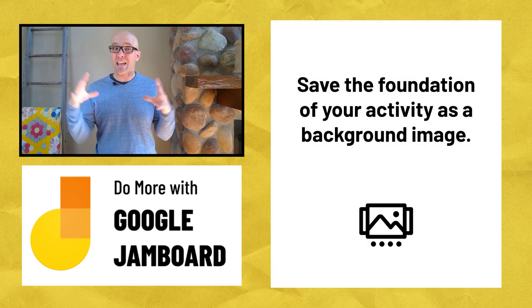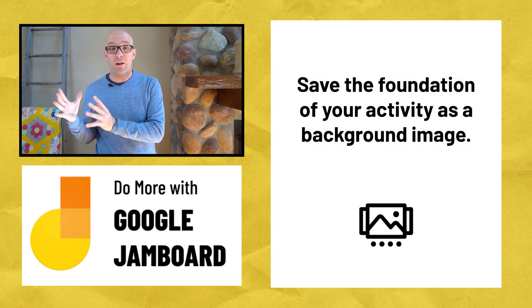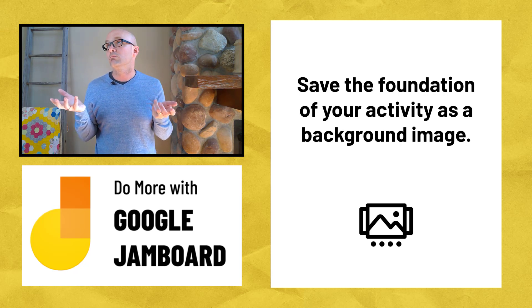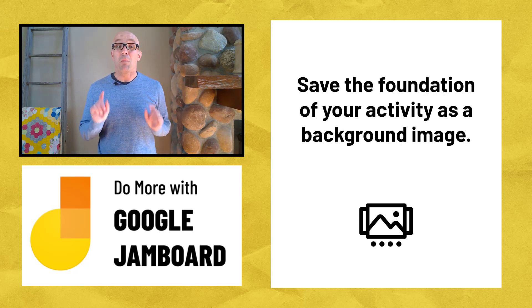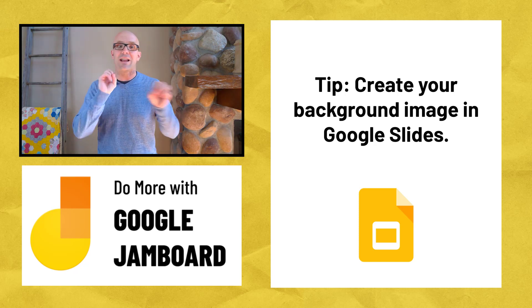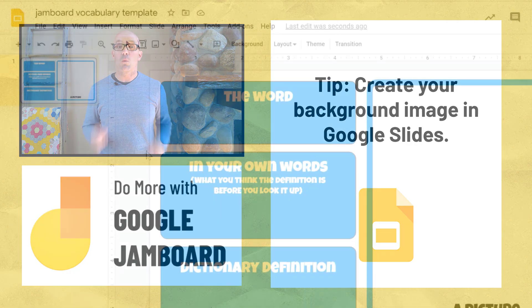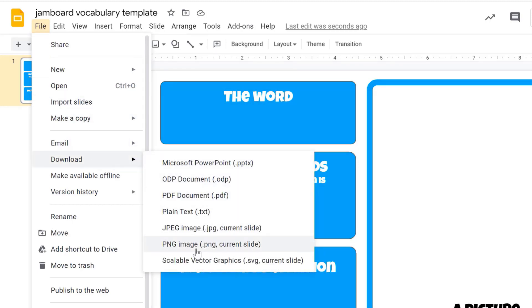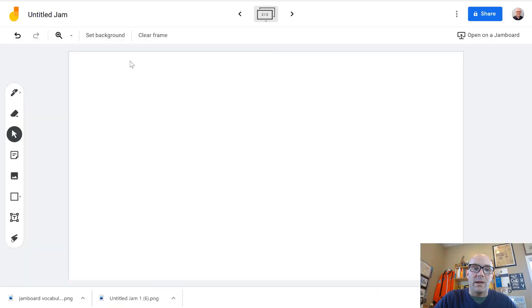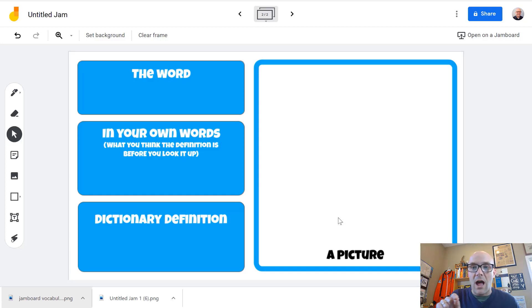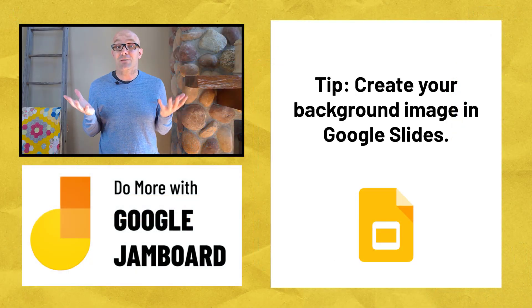We're going to take all of these elements and save them as an image, and we're going to make that image the background image for our Jamboard activity. When we save all of these items as a background image, it locks them in place so students can't accidentally — or not so accidentally — delete them or change them. My favorite way to create that background image is in Google Slides. When you create a new Google Slide presentation, the dimensions of the slide fit very nicely with the size of a frame in Jamboard. On this slide, add everything that you want students to see but not edit. Once you're finished, go to File, Download As, and pick PNG Image — that'll save everything as one image file. Then head back over to your Jamboard file, click Background, and choose the button for a custom background image. Once it's in place, you can't move any of these items around in the background. That's it — you're done with step one.